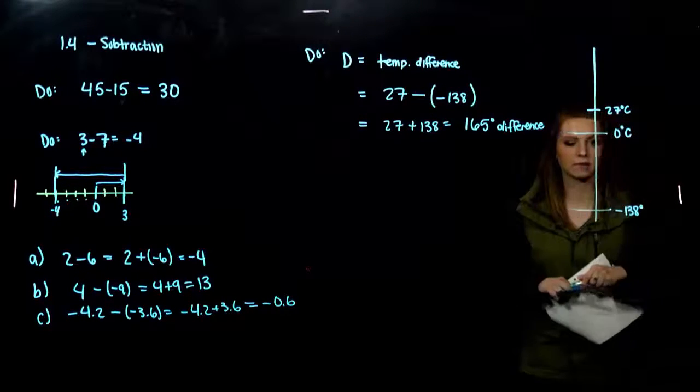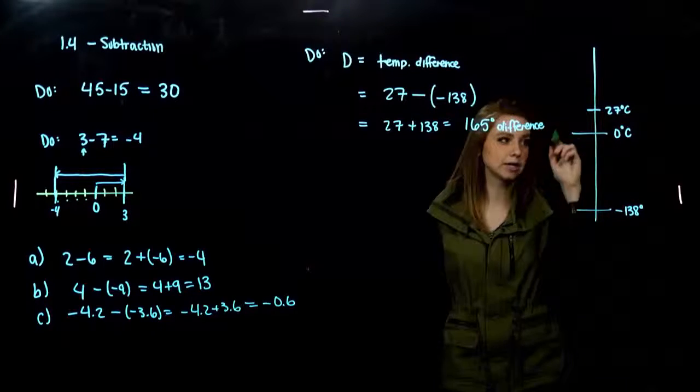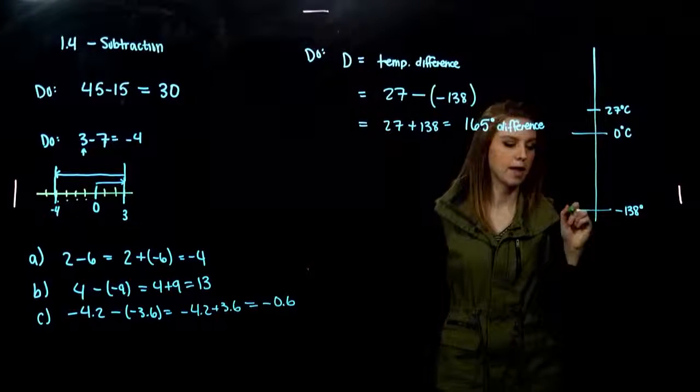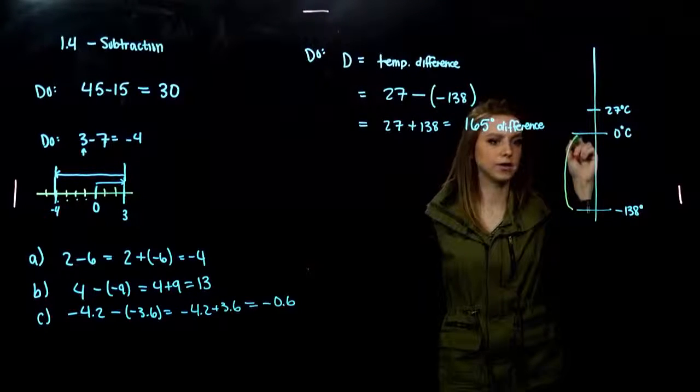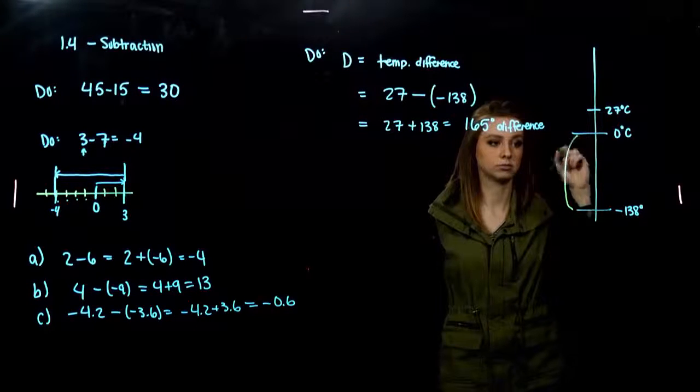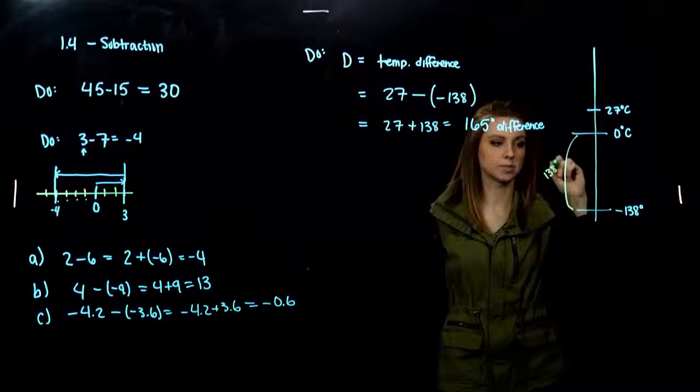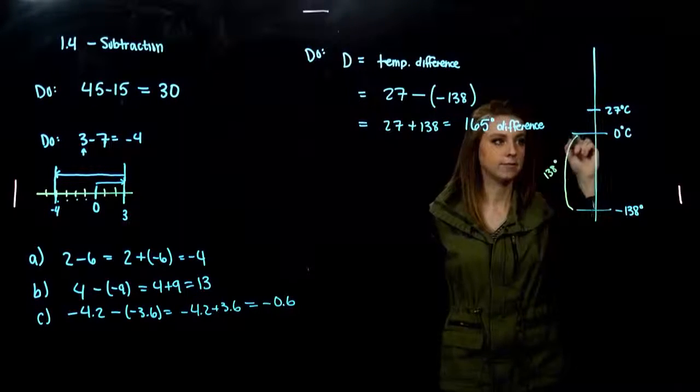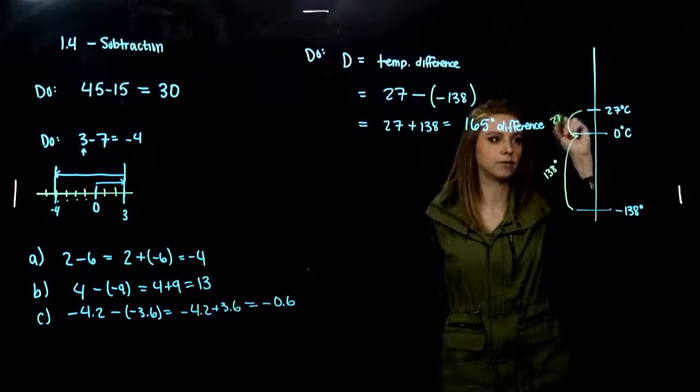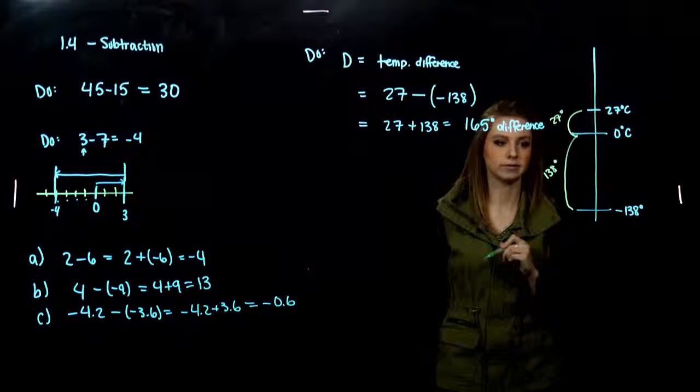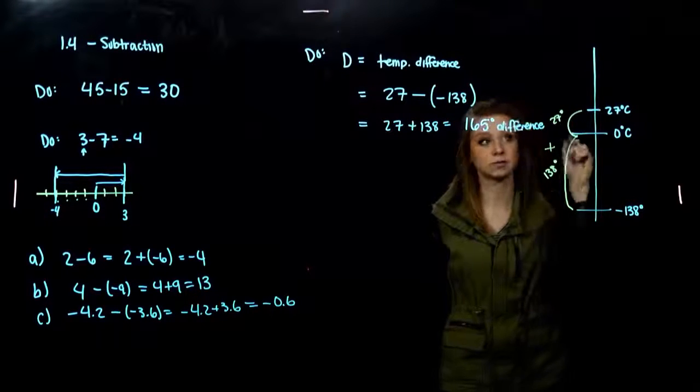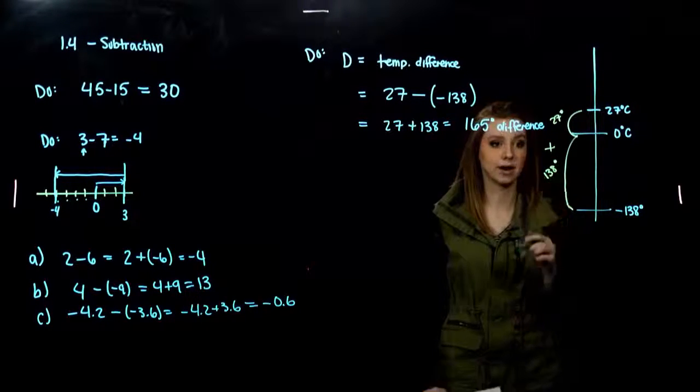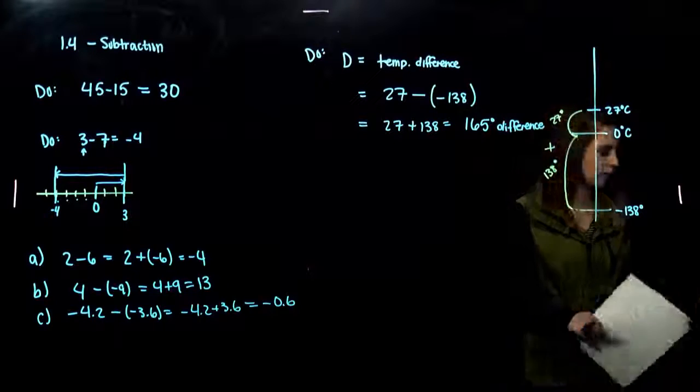And, we're asking for the difference between these two values. So, to start from negative 138, to get to 27, what has to happen? I have to increase 138 degrees to zero. Then, from zero, I have to increase by another 27 degree increase. So, the difference between those we have is 165.